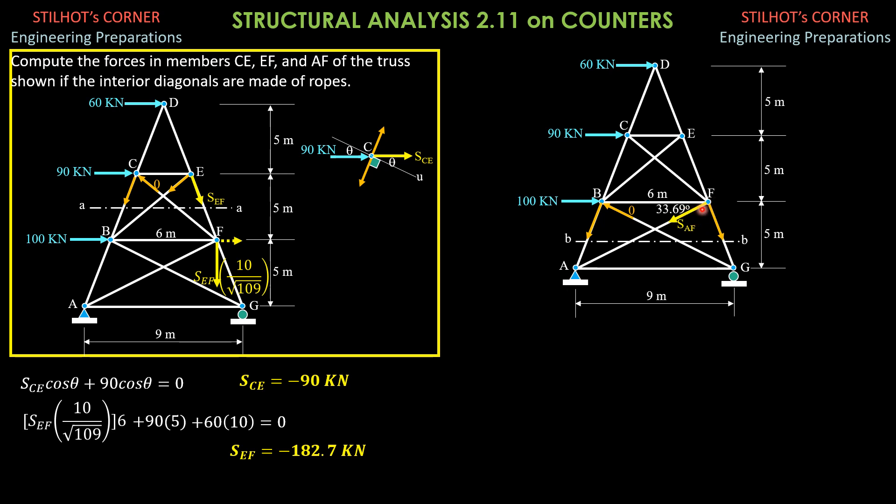I move this force SAF here at the center so that the vertical component passes through D. We plan to sum up moments about D because these two unknowns meet at D. Only the horizontal component is important and that is SAF cosine of 33.69 degrees.